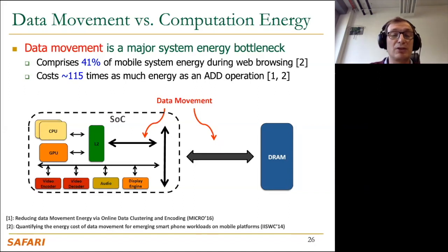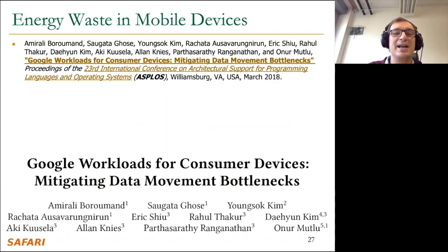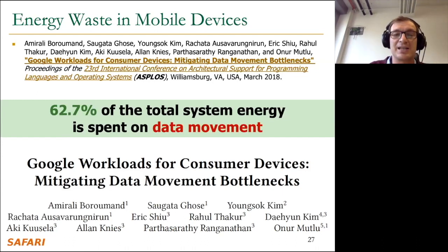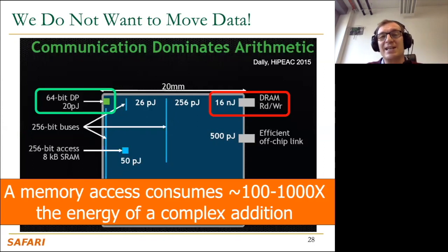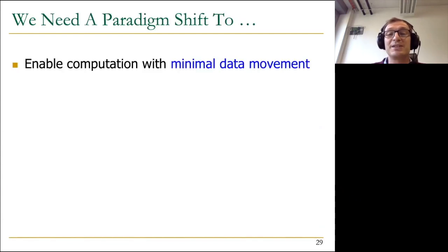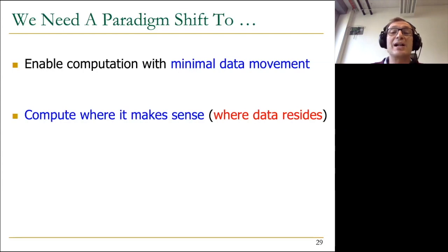As a result, we've found that more than 60% of the entire system energy is spent on data movement in important applications. We do not want to move data — moving data is not good for performance, energy, security, or reliability. Why don't we just keep data where it is and change the paradigm of computation to enable computation with minimal data movement? Compute where it makes sense — where the data resides — or while the data moves if it really needs to move.